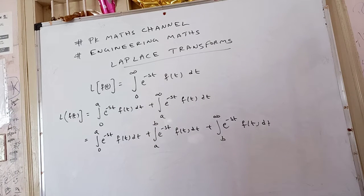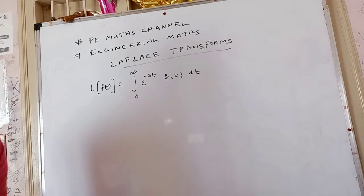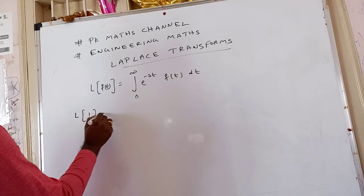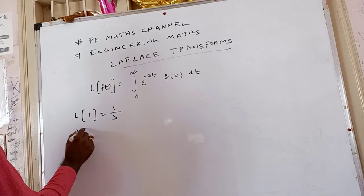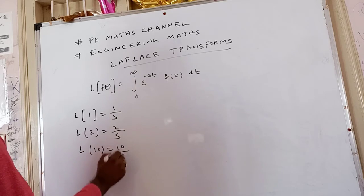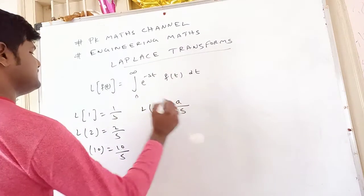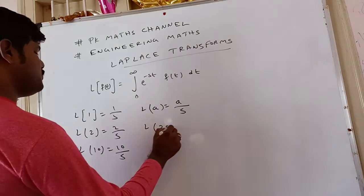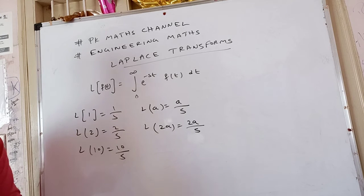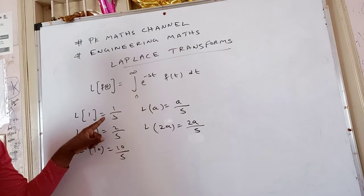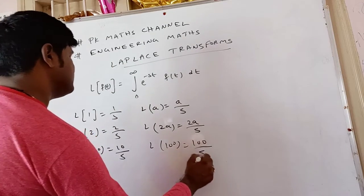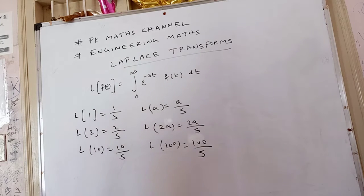Dear students, we will discuss the next formula. Laplace of a constant: L{1} = 1/s, L{2} = 2/s, L{10} = 10/s, L{a} = a/s, L{2a} = 2a/s. Like this — whenever a constant is given, the Laplace transform is that constant divided by s. Suppose L{100} — you write 100/s. Whenever a constant is given, you write it over s.